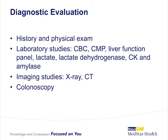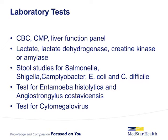Various laboratory studies can be utilized to help diagnose ischemic colitis. Complete blood counts, complete metabolic panels, and liver function studies may aid in the diagnosis. Other useful labs include lactate, lactate dehydrogenase, creatinine kinase, and amylase. Though these markers are not specific to ischemic colitis, if elevated they suggest inadequate perfusion or nonspecific tissue injury. Stool studies should be considered to look for Salmonella, Shigella, Campylobacter, E. coli, and C. difficile. Parasitic infections should remain on the differential, and viruses such as CMV may also present similarly with vague abdominal pain.